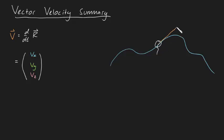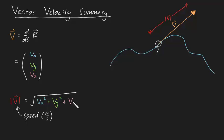You can also prove that the direction of the vector is always tangential to the path, and that the magnitude of the velocity, called speed, is equal to the square root of vx squared plus vy squared plus vz squared.